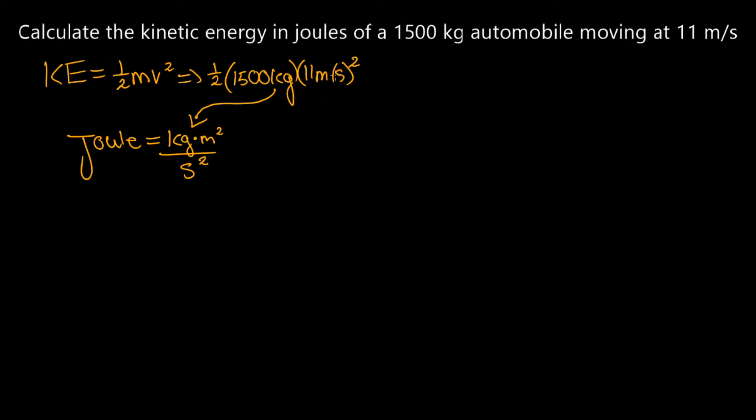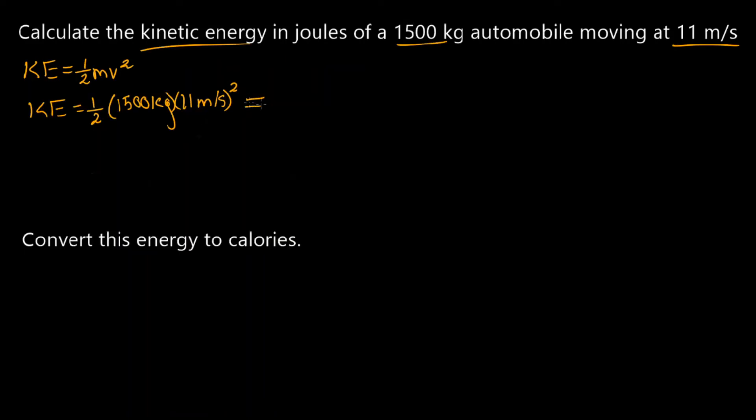As you can see, the meter gets squared here, the second in denominator gets squared here, so meters per second, and the mass is just kilogram, you just plug that straight in. We don't need to convert to just normal grams at all. Now if you crunch that into a calculator...